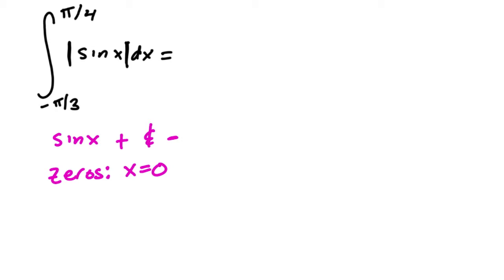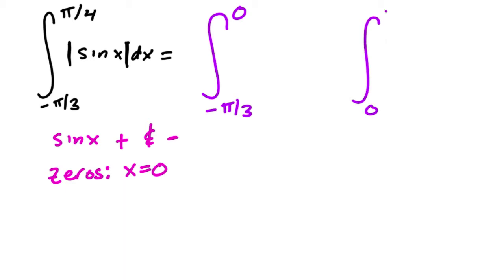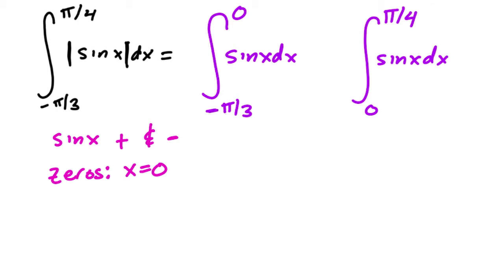So we split this integral into two parts: from negative pi over three to zero, and from zero to pi over four — both of sine of x. On whichever interval sine is negative, we multiply by a negative. Since sine is negative from negative pi over three to zero, we add a negative on the outside of that to make it positive. The second part is already positive.